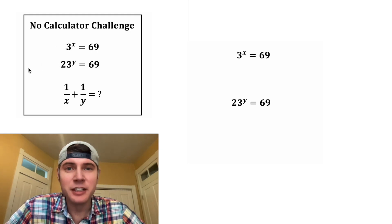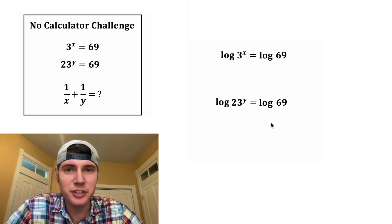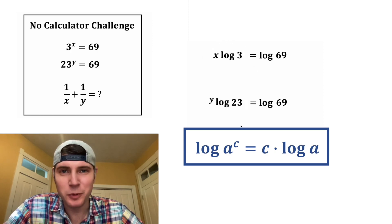First, let's copy down the given equations. And then for both of the equations, I'm going to take the logarithm of both sides. One of the properties of logarithms is that this exponent can be brought down in front. And same thing for this exponent down here.